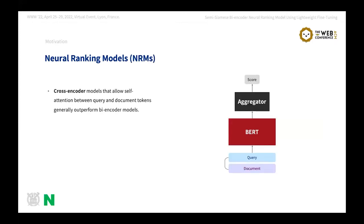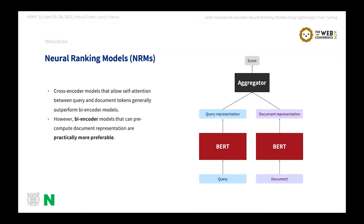We can classify BERT-based NRMs into two types. The first one is cross-encoder. Cross-encoder models allow self-attention between query and document tokens. Therefore, BERT generates qualified contextualized representation considering the interaction between query and document tokens. However, in the real world, bi-encoder models are more preferable because all the documents can be pre-processed through BERT before the query comes. With this reason, we mainly focus on improving the performance of bi-encoder models in our paper.